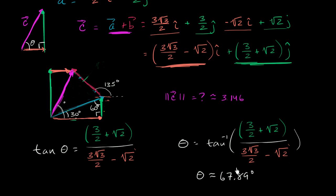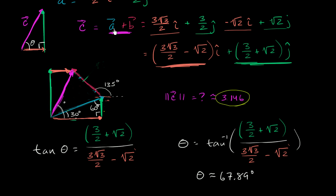Now there's one thing interesting to keep in mind: the magnitude of this vector is less than the sum of the magnitudes. The magnitude of vector A was 3, the magnitude of vector B is 2, so 3 plus 2 would have been 5, but this has a smaller magnitude. The only way the magnitude of a sum equals the sum of the magnitudes is if both vectors are going in the exact same direction — then they'd be completely additive. If they're going in even slightly different directions, the magnitude of the sum will always be less than the sum of the magnitudes. I'll talk about that in more depth in the next video.